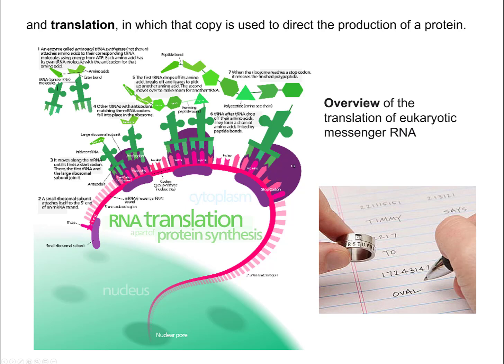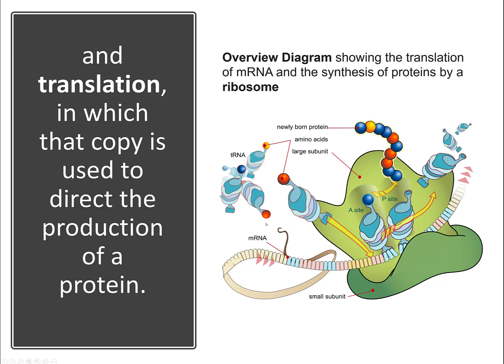The ribosome structure is more than just a blob — as the messenger RNA is threaded through it, charged transfer RNAs come in. If the anticodon matches the codon, it binds tightly. If it's a mismatch, it can't fit and is bumped out until the correct match is made. The acceptor site and P site are where the amino acid is added to the chain through a peptide bond, creating the new protein. Once assigned to the chain, the uncharged transfer RNA is kicked out and must be charged again.